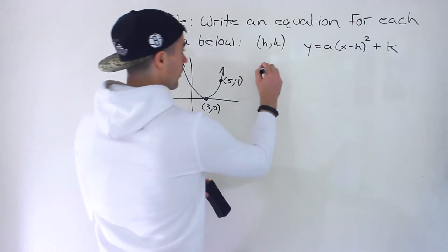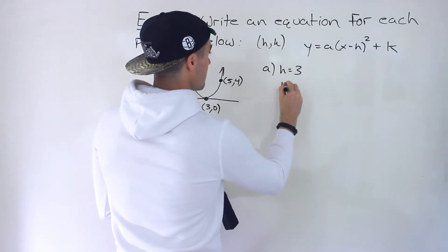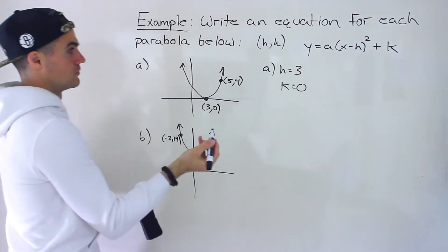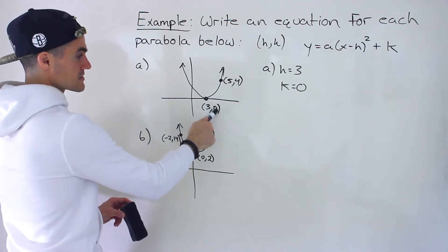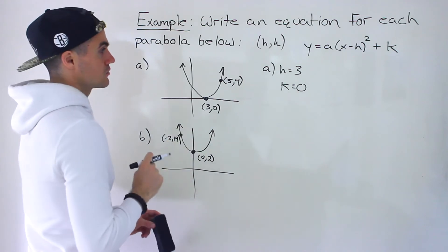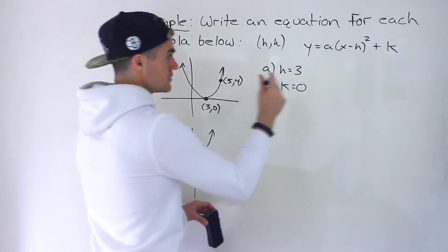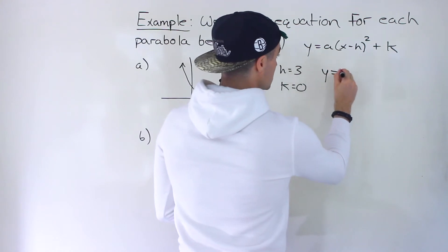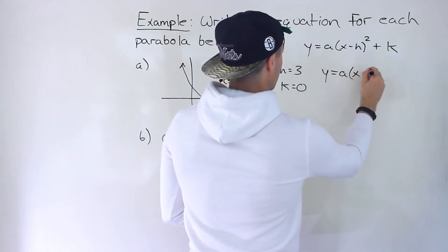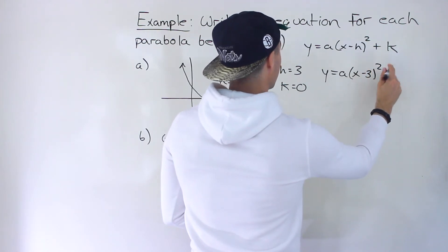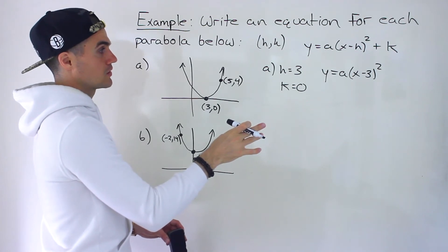So notice that for part A, the H value is 3, the K value is 0. The X and Y values of the vertex, respectively. And so once you have that, you can plug it in. Now the A value, we still don't know what it is. So let's keep it like that. Then we got X minus 3 squared, and then we have plus 0. So we don't even have to write that K value.